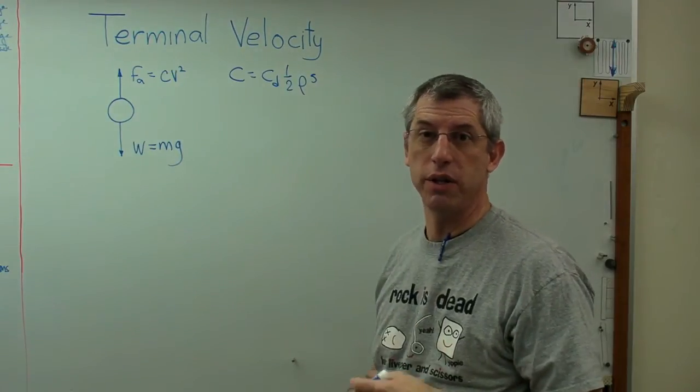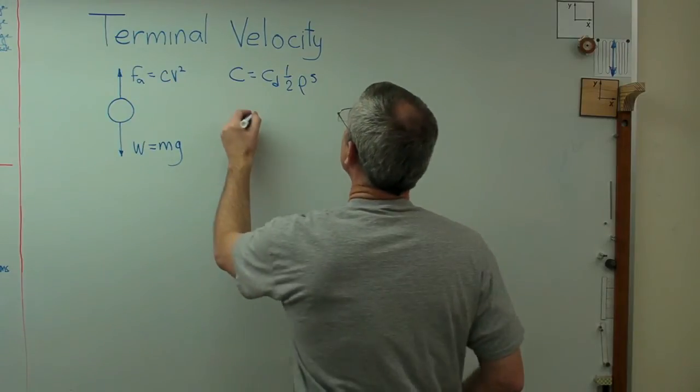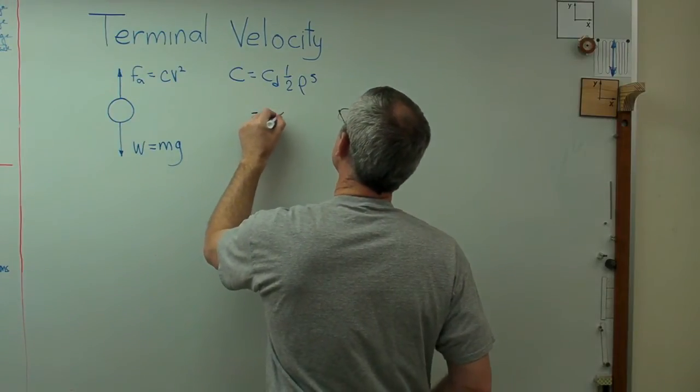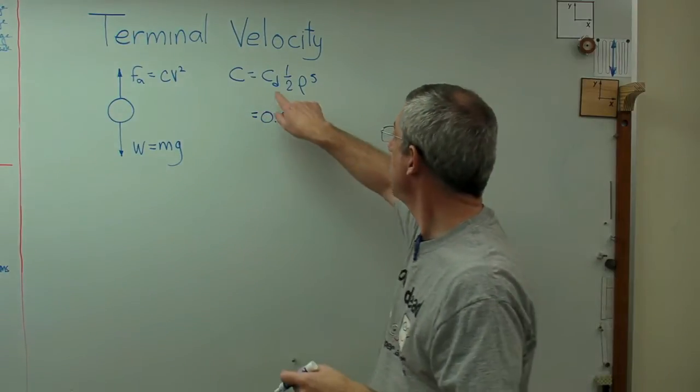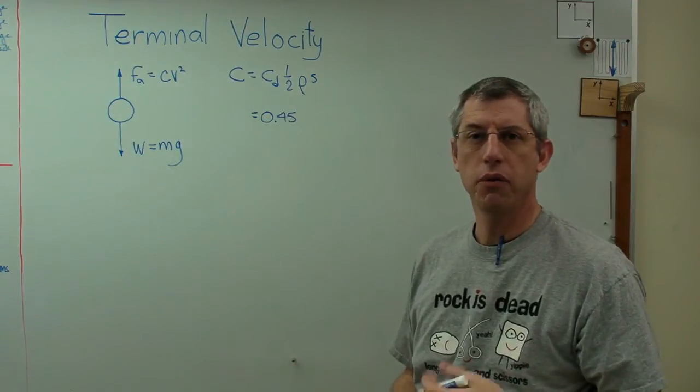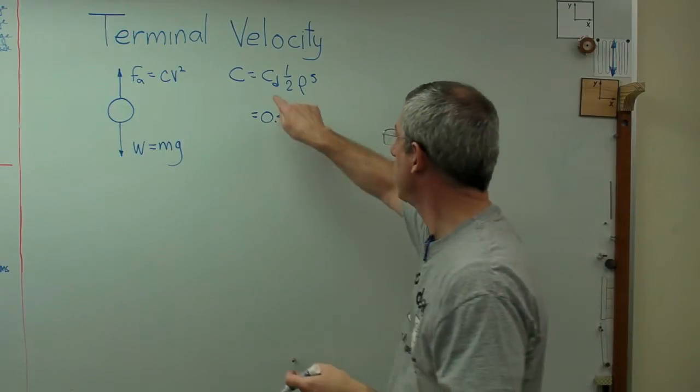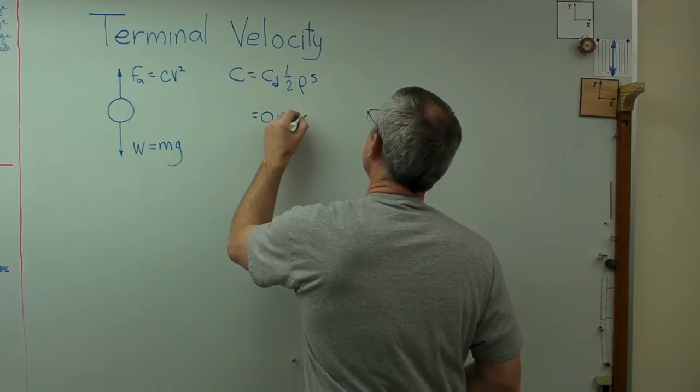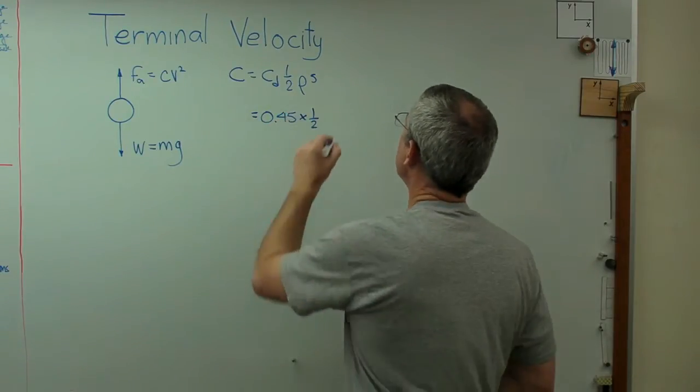Drag coefficient is something you look up and it's dependent on the shape. For a ping pong ball, the drag coefficient is about 0.45 and it's unitless too. Sometimes you see drag coefficient for cars. Everybody wants to tell you how low drag their car is. And so they've got drag coefficients. Sometimes you'll see those in car ads. Well, there's one half. That's just a number.